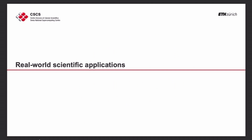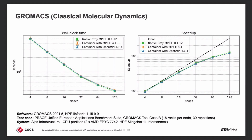Let's move to real-world applications, because that's what matters for users. Starting with GROMACS, the classical molecular dynamics software very popular in computational chemistry. The test case is the GROMACS test case B from the PASC Unified Applications Benchmark Suite, running from 4 nodes up to 128 nodes. We observe that the native variant is slightly ahead at all node counts — there's still a slight advantage for the native implementation — but the containers are hot on its heels, trailing it pretty close.